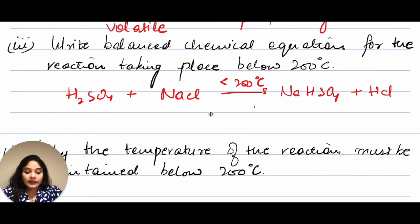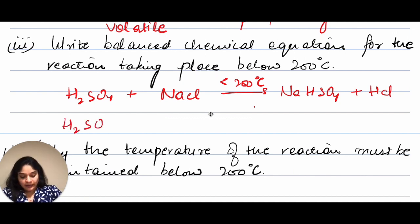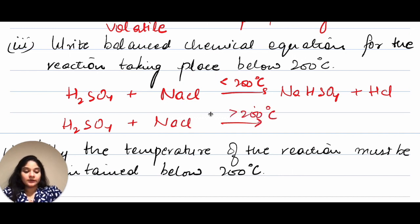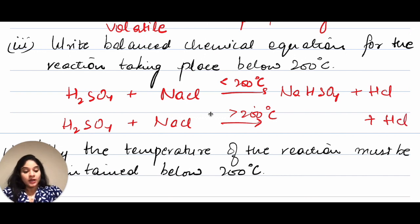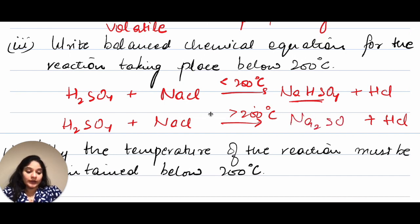If the reaction is above 200 degrees Celsius, H₂SO₄ plus NaCl would still give HCl, but the other product would be Na₂SO₄ — sodium sulfate — instead of sodium bisulfate.